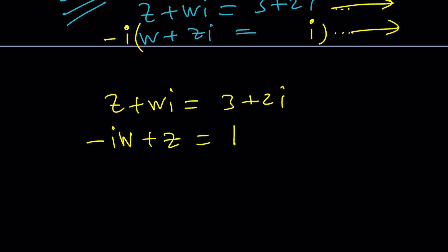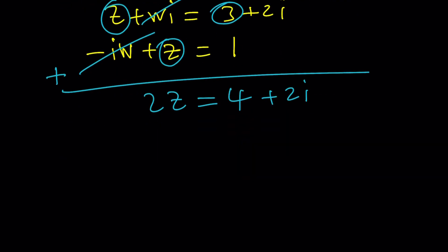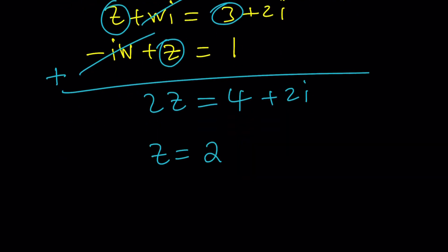Now, notice that if you add these equations, wi is going to cancel. iw and wi are the same, by the way. z plus z is 2z, or not 2z. That's awesome. 3 plus 1 is 4 plus 2i. Divide by 2, z equals 2 plus i as before. Seriously? We got the same answer before? Of course, we did.